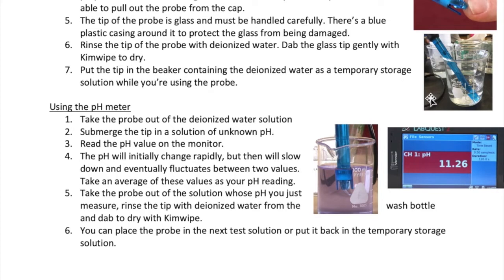To use the pH meter, take it out from the deionized water beaker and then submerge the tip in a solution whose pH you want to measure, as shown here. Wait until the pH value on the monitor stays relatively constant.